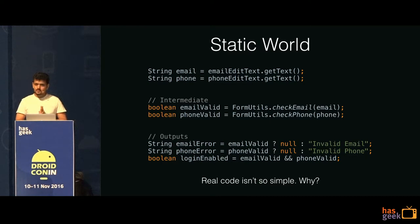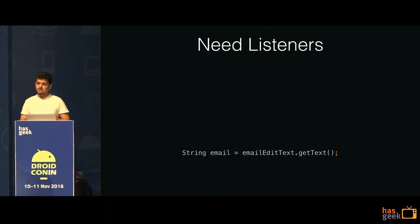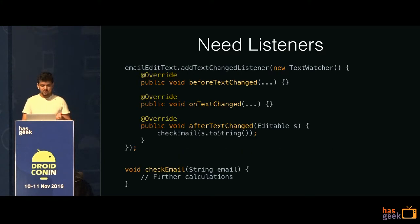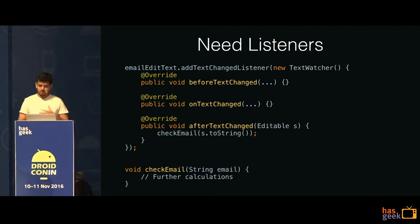But then our code is not so simple, because the dynamic changing state starts to come in. The first thing is that we need listeners — the text is not constant, you cannot just get it once and be done with it, it keeps changing. So the first thing you will do is add listeners. What was that single line changed to this bunch of code. In this, I am invoking the check email function whenever my text changes, so further calculations can be done in this function.